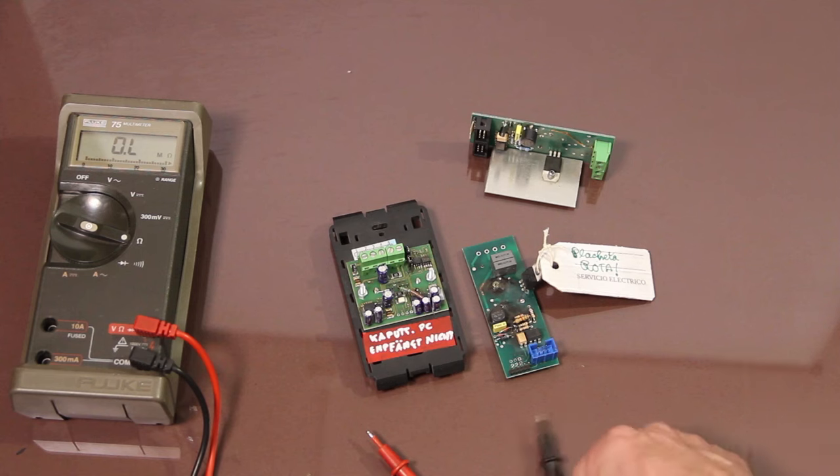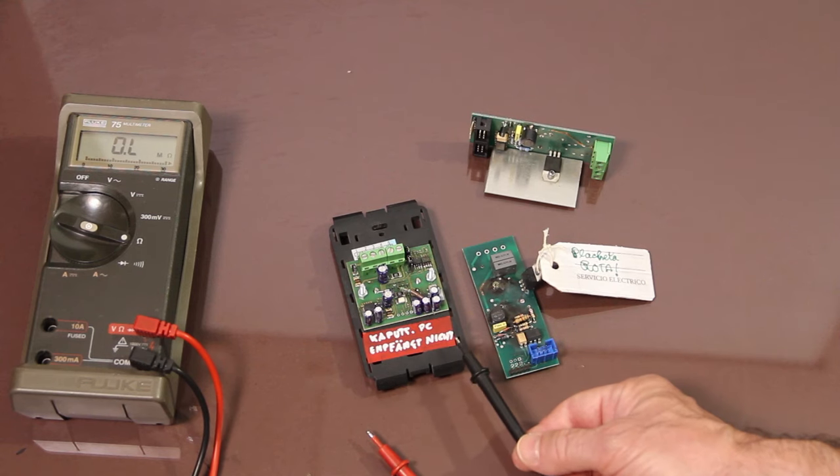So the first step is try to get an idea of what the board is supposed to do and why it doesn't do that. And this can be done by gathering information. You need to know how the board is meant to work, its power supply, and the expected outputs in relation with inputs. And people that brought the board to you can provide useful information.